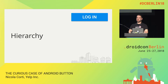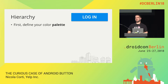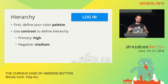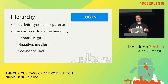Hierarchy. So you want to give importance to your button and make sure the user presses the right button on your screen. The first thing you need to do is define your color palette — make sure it's well defined with a background color, a primary color, a secondary color. Once you fix that, use contrast to define hierarchy. Your primary button will be in high contrast with your background — it'll be your accent color. Then you'll have a negative button at medium contrast with the background, and a secondary button at low contrast.